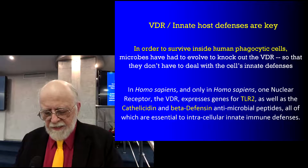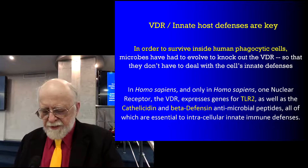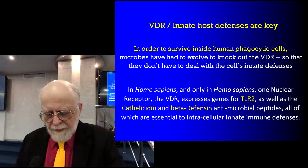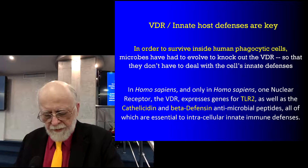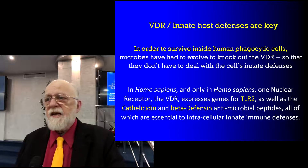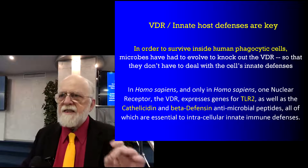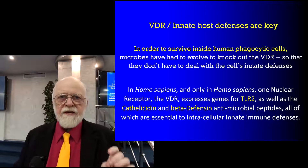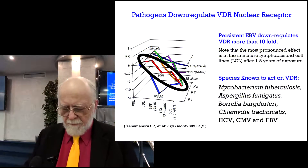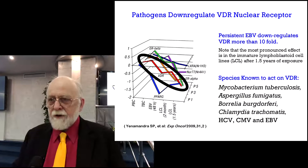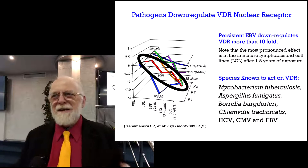A key factor is a nuclear receptor called the VDR. The VDR nuclear receptor is a type 1 nuclear receptor that, in Homo sapiens, is responsible for generating TLR2, as well as cathelicidin, beta-defensin, and, to a secondary extent, alpha-defensins. These are key antimicrobial defences at the cellular level, and if those defences are knocked out, the microbes have a much better chance of survival. It's no surprise that all of the really successful pathogens knock out the VDR very effectively.